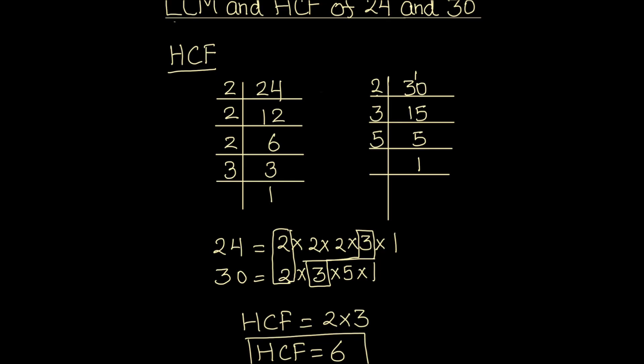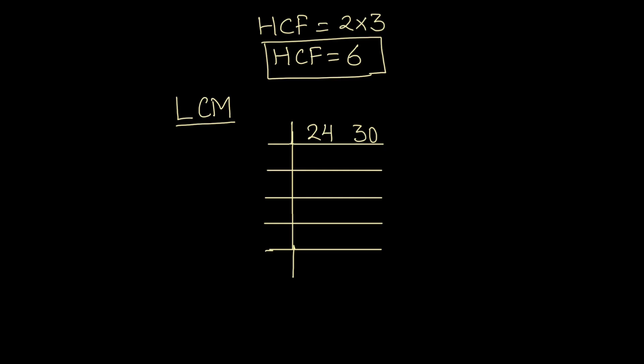Now let's find the LCM of the two numbers. For finding the LCM, we are going to write the two numbers on a single ladder and divide them by prime numbers. As both the numbers are even, we can use 2 to divide them.